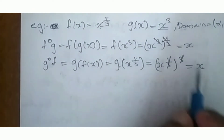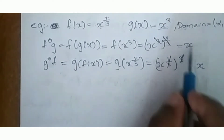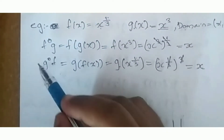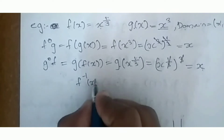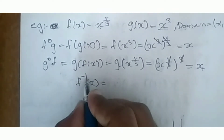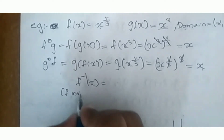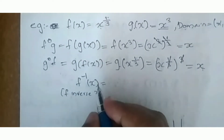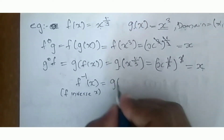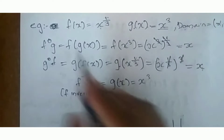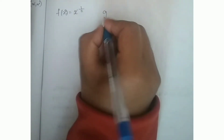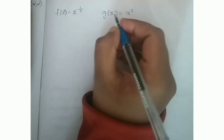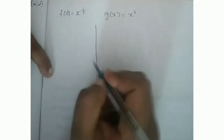The answer is x in both cases. F composite g and g composite f both equal x. So we denote f inverse of x, and f inverse of x is g of x, which means x cubed. This function is the inverse. So f of x is equal to x raised to 1 by 3, and g of x is equal to x cubed, meaning f inverse of x is equal to x cubed.